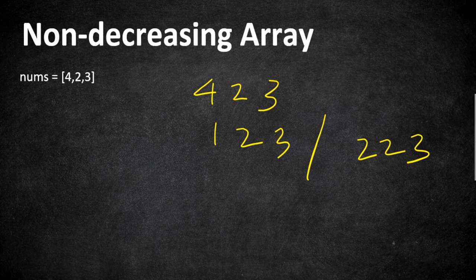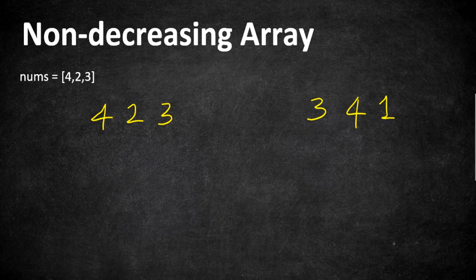For example in this array 4, 2, 3 you can either change it to 1, 2, 3 or 2, 2, 3 both are said to be in non-decreasing order. So the numbers can be equal. Let's first understand these two examples to understand the logic of this problem.